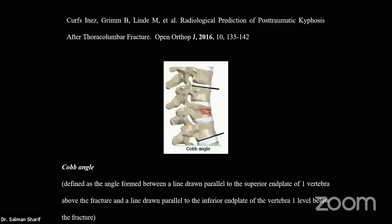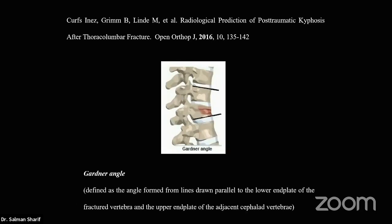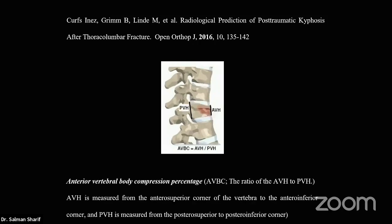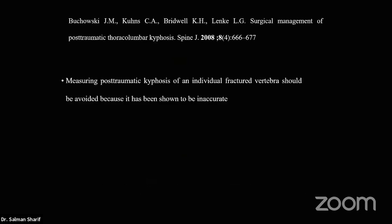Thoracolumbar fractures and kyphosis. The main problem starts with the definition — there is no consistent definition for post-traumatic kyphosis. As Professor Bejamal has shown us, there are lots of measurement types: Cobb angle, Gartner, vertebral compression, anterior vertebral body compression percentage. But they say that if you only calculate it focally, you may make a mistake.